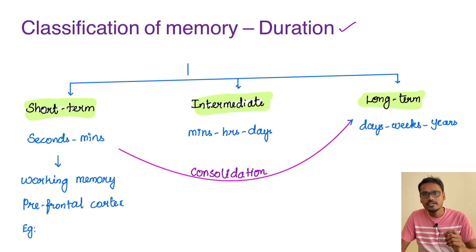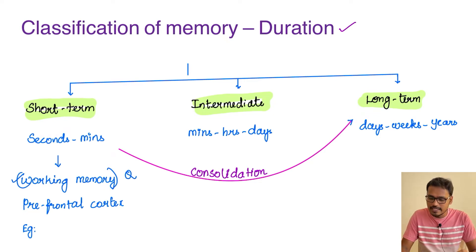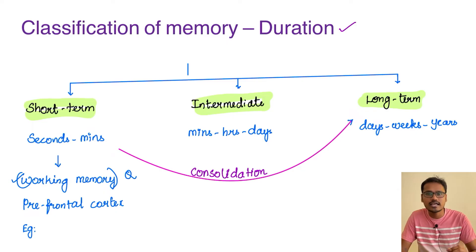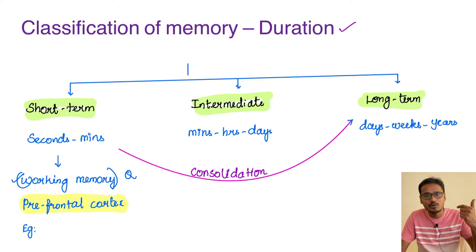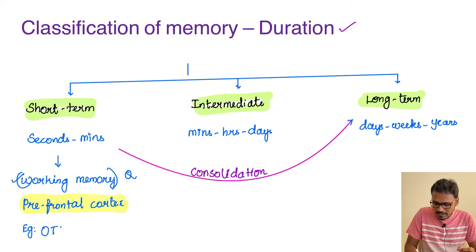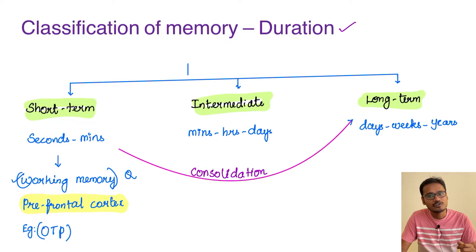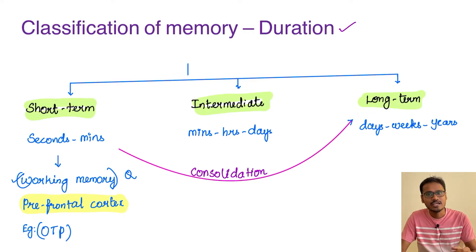There is one more term called working memory. Working memory is a part of short-term memory and is especially managed with the help of the prefrontal cortex. As we saw in our cognition class, whenever there is an injury to the prefrontal cortex, the person is not able to do working memory. For example, as children when our mother asks us to buy something, we keep repeating it until we tell the shopkeeper. Another example is OTP — whenever an OTP arrives during a transaction, we keep repeating that number until we enter it. Once you enter the OTP, you will definitely forget it.